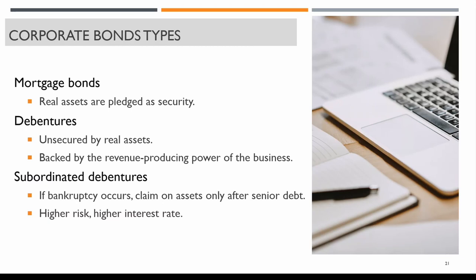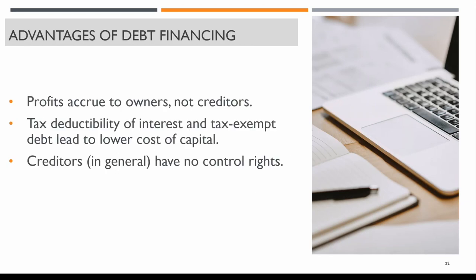Under corporate bond types, you can find different categories: mortgage bonds, debentures, and subordinated debentures. Mortgage bonds generally mean that there are real assets pledged as security.